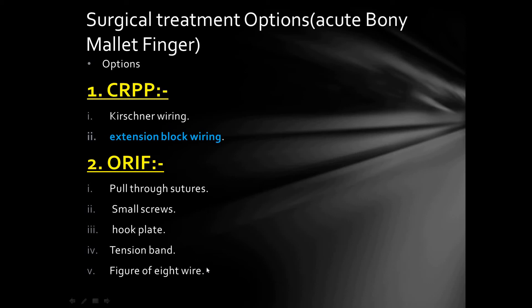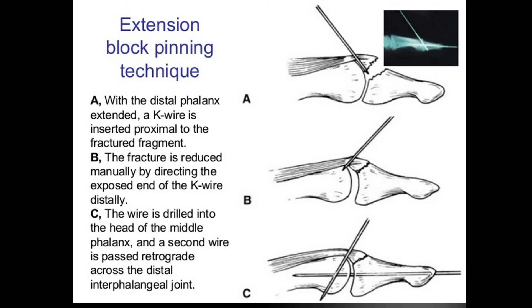Surgical treatment of acute bony mallet finger includes closed reduction percutaneous pinning or open reduction and internal fixation. For closed reduction percutaneous pinning, options include K-wiring or extension block pinning. For open reduction and internal fixation, multiple options exist: pull-through sutures, small screws, hook plate, tension band, and figure-of-eight wire.